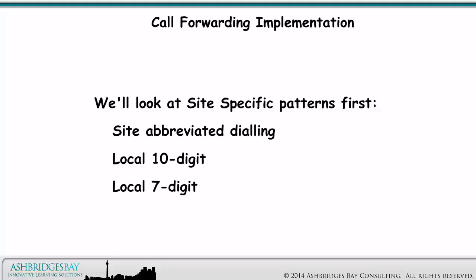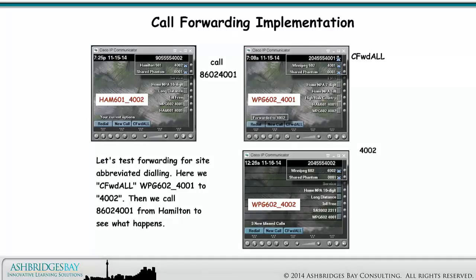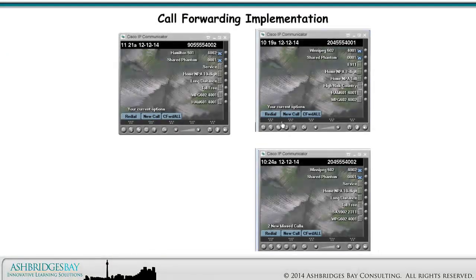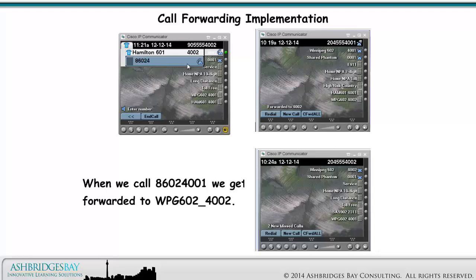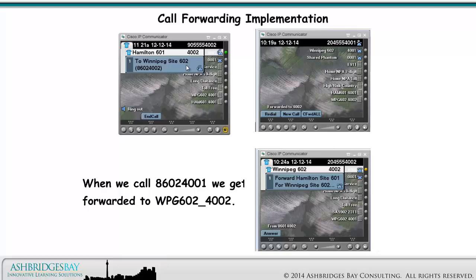We'll look at site-specific patterns first: site-abbreviated dialing, local 10 digit, and local 7 digit. Let's test forwarding for site-abbreviated dialing. Here we call forward all Winnipeg 602-4001 to 4002, then we call 8602-4001 from Hamilton to see what happens. When we call 8602-4001, we get forwarded to Winnipeg 602-4002. It's a success!